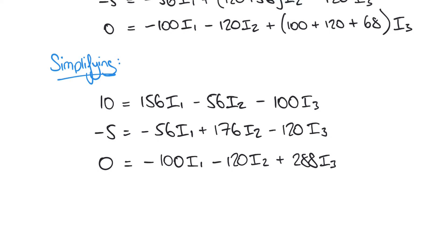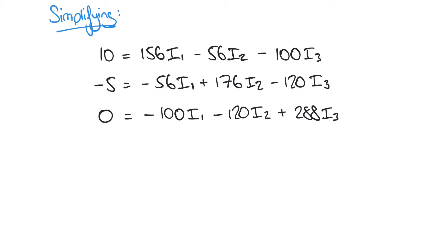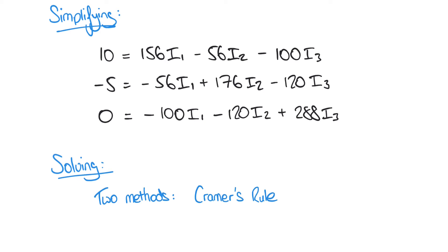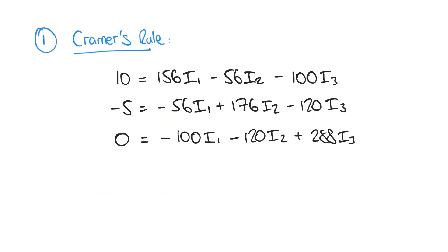We've set up our system of equations, and all that remains is to solve them. We're going to look at two different ways: Cramer's rule and the inverse matrix approach. Let's start with the first method, Cramer's rule. Both methods actually involve matrices — we'll start by presenting our system of equations in matrix form.